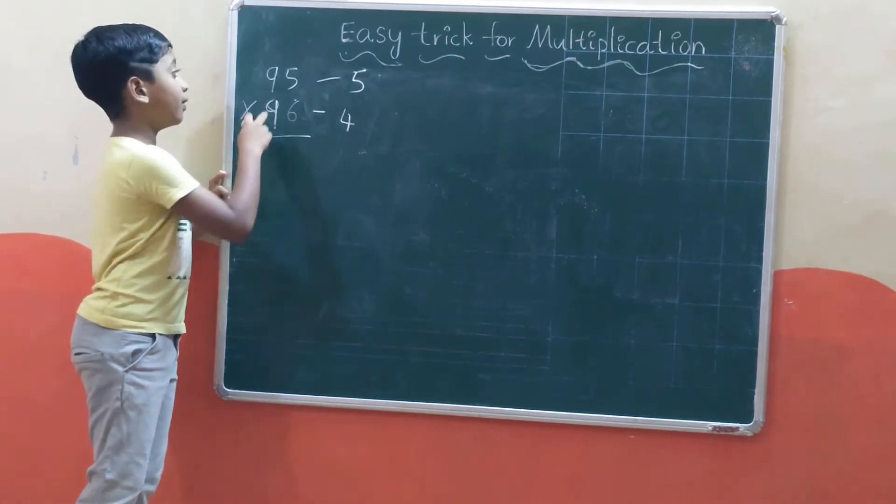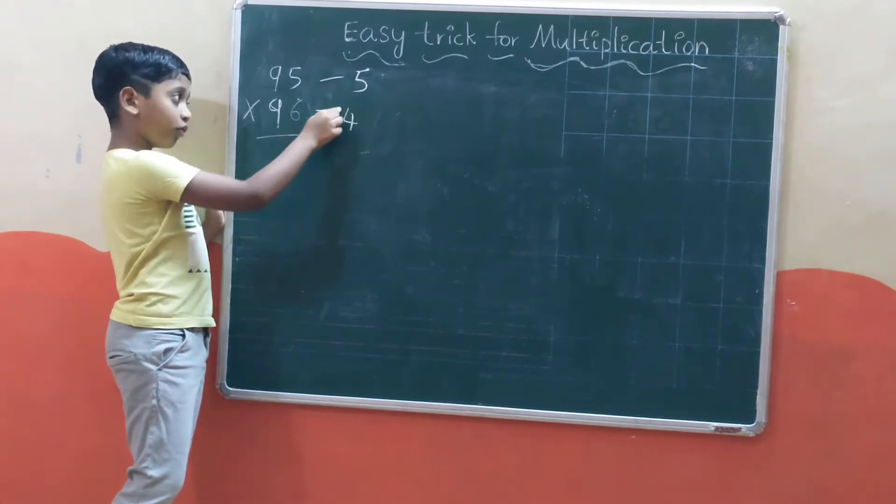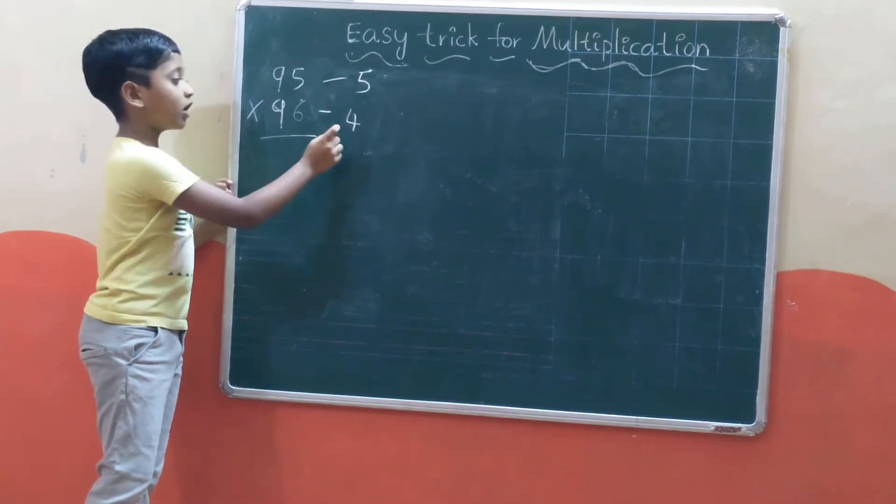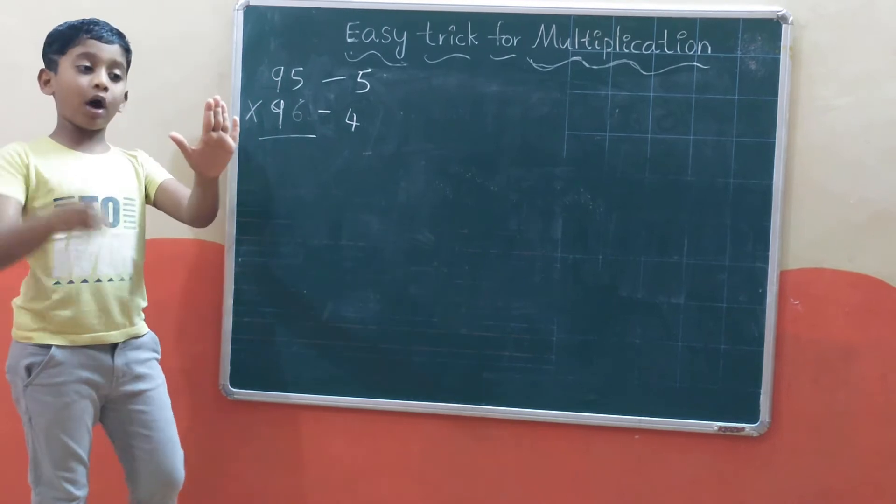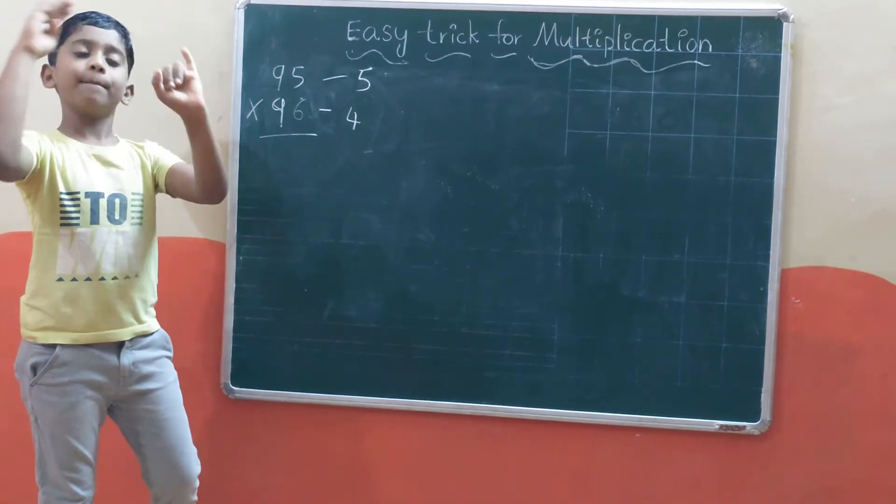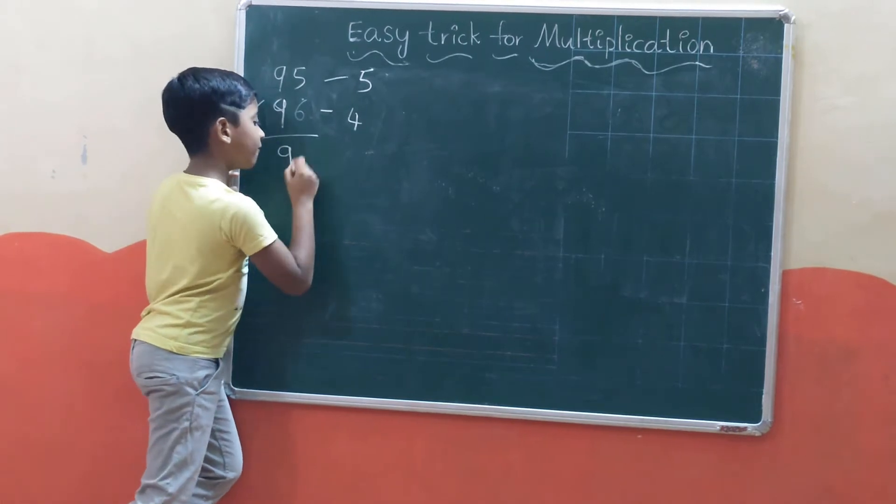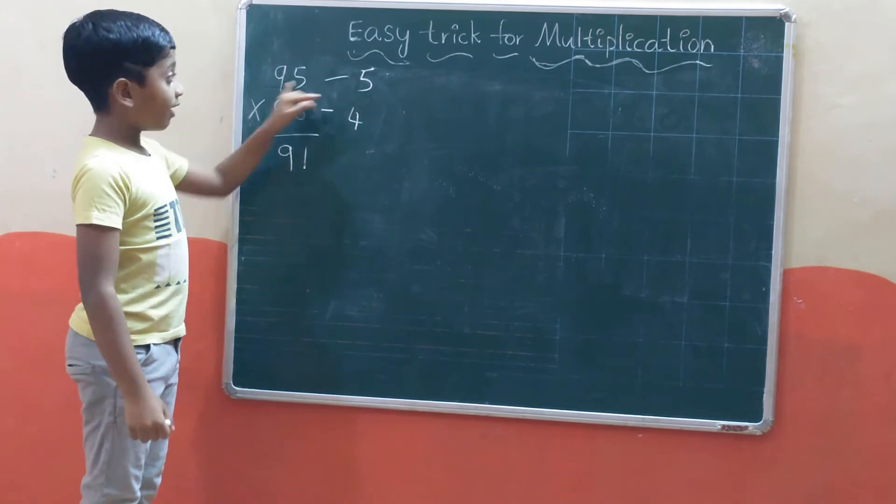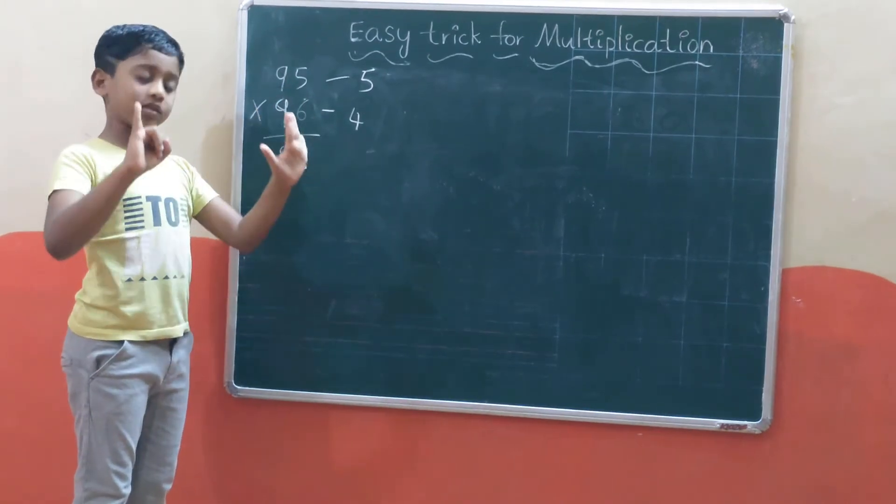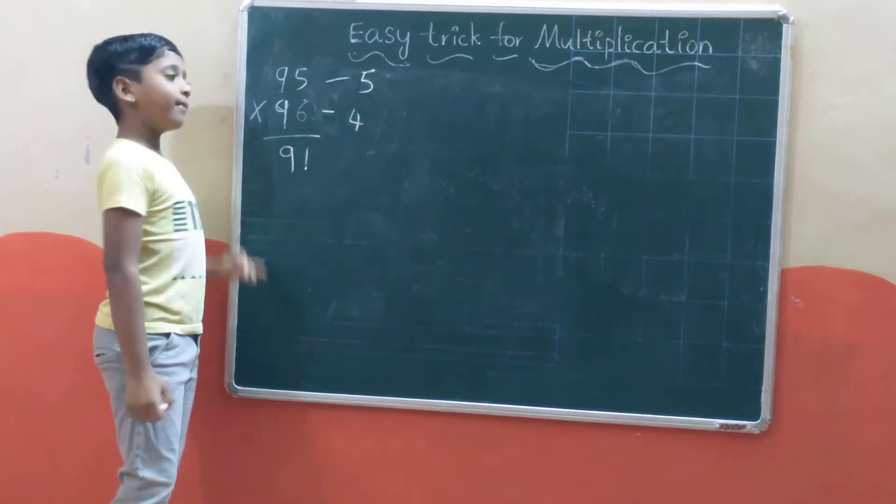Now we write the figures like this: 95 minus 5, and 96 minus 4. We have to subtract: 95 minus 4 gives 91, or 96 minus 5 also gives 91.